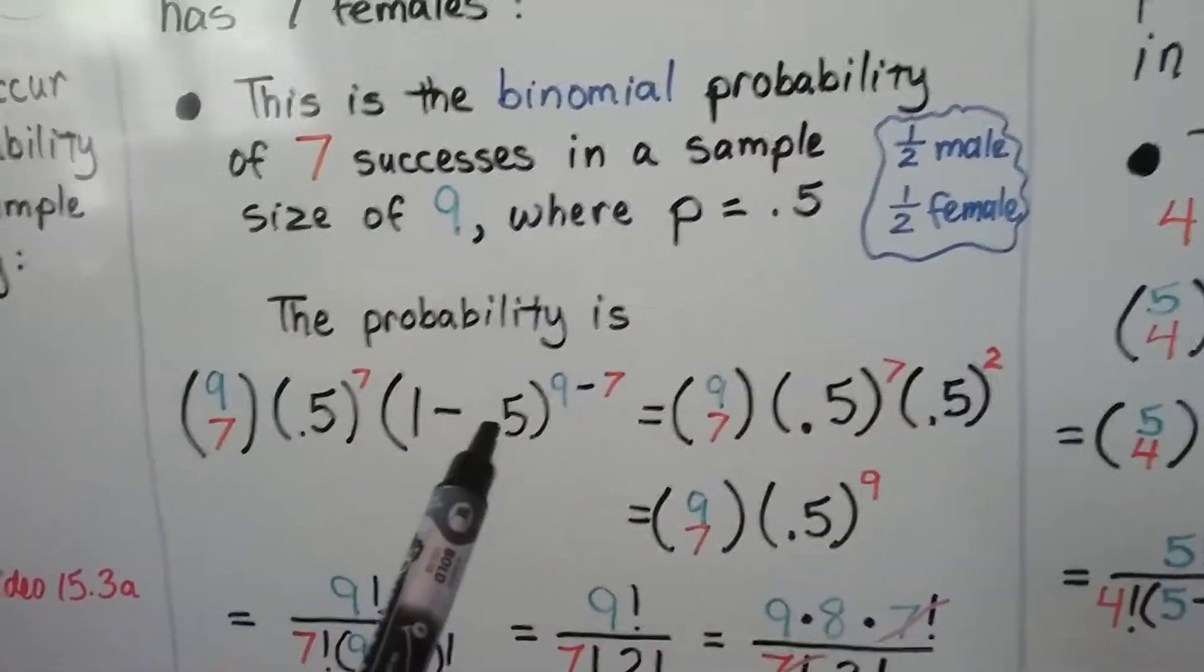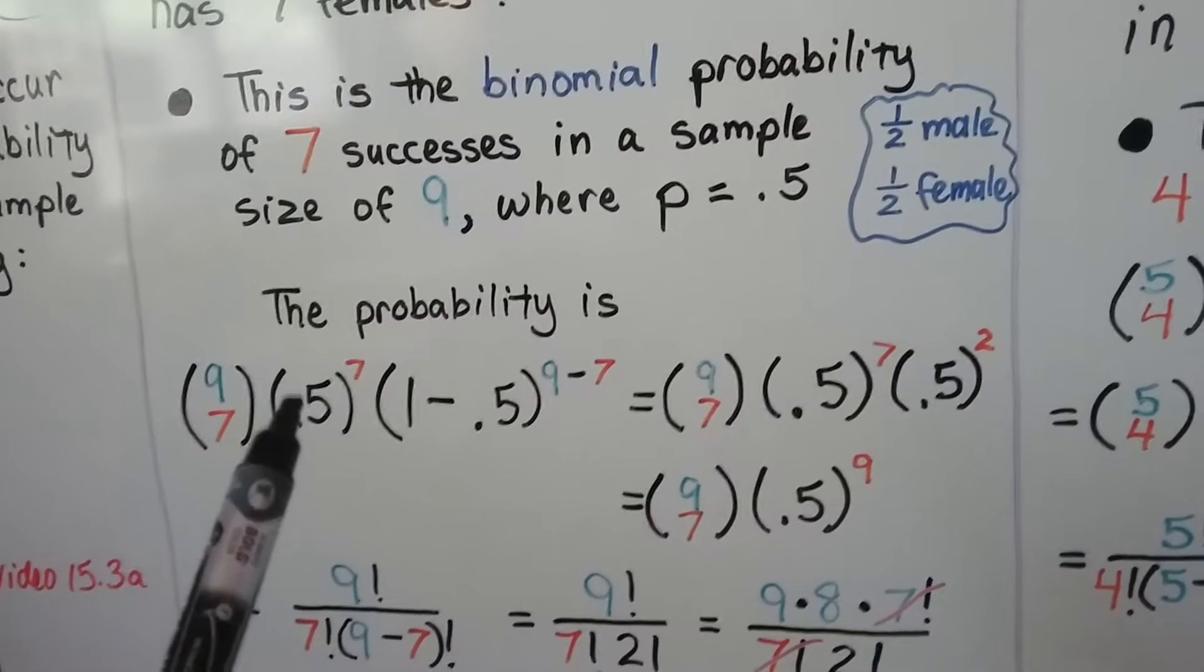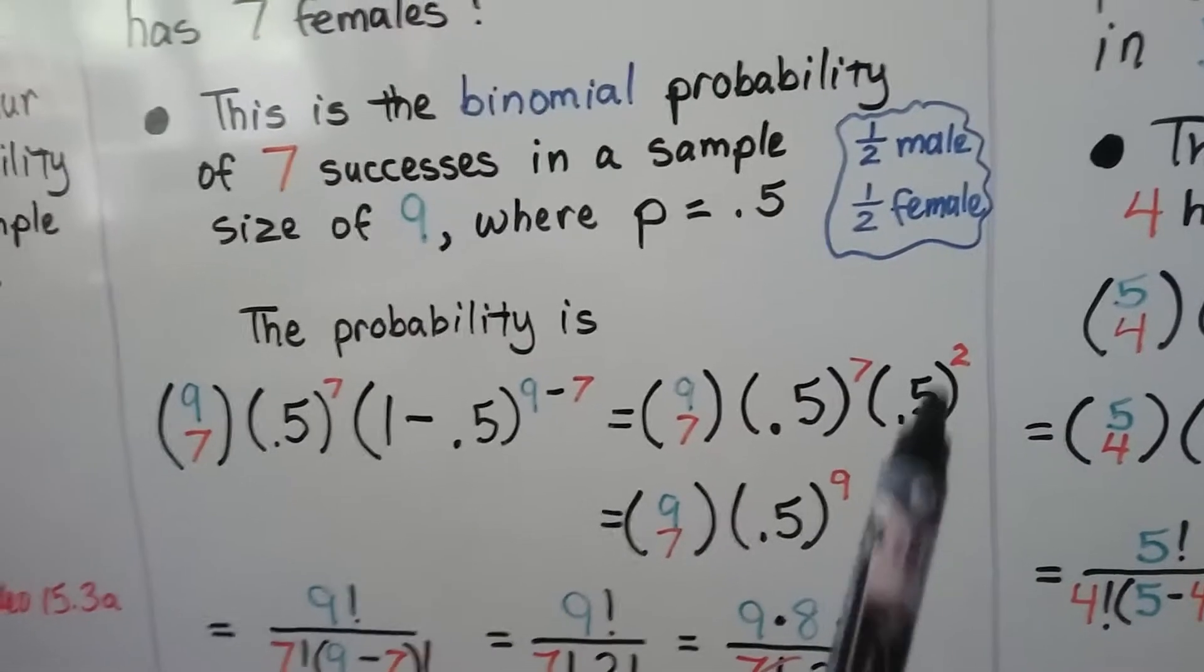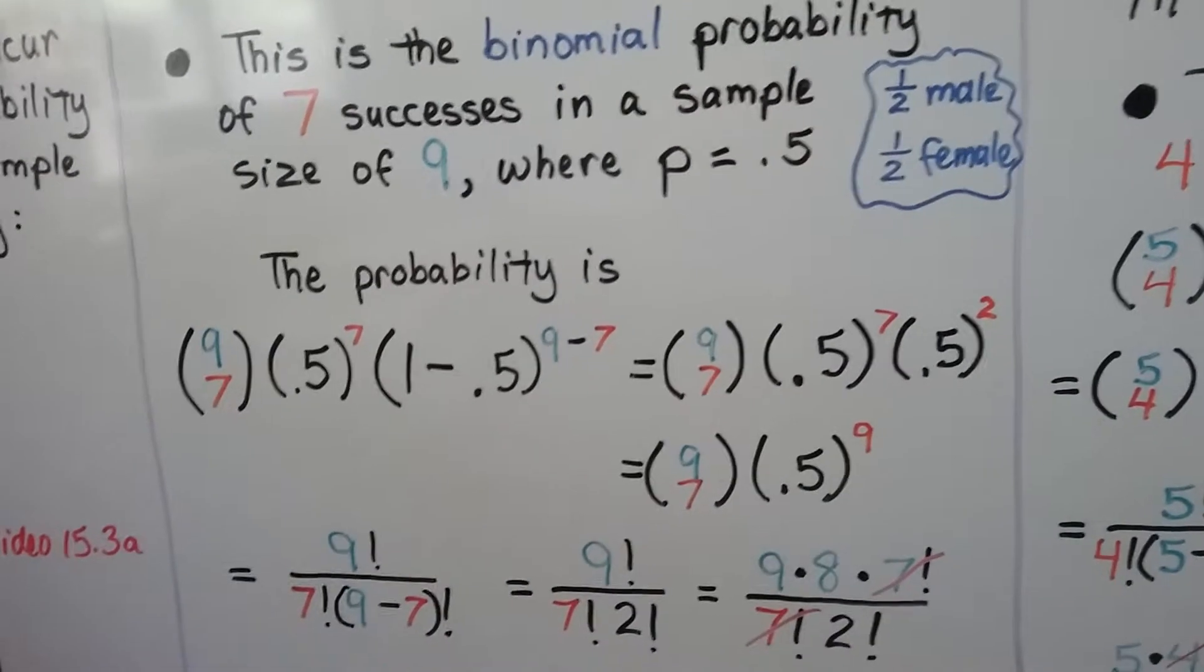Well, one minus 0.5, one minus a half is a half. So we end up with 0.5 to the seventh, times 0.5 to the second. These have like bases, so we can just add the exponents. We have 0.5 to the ninth.